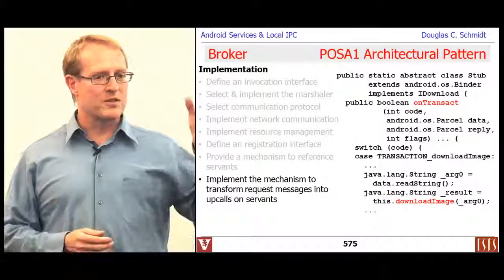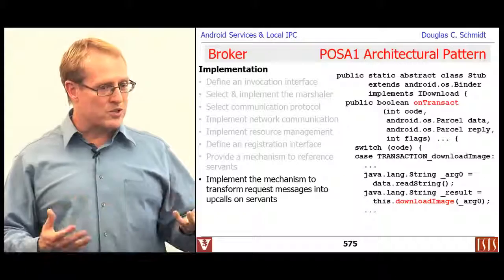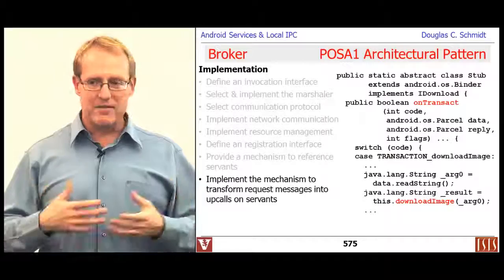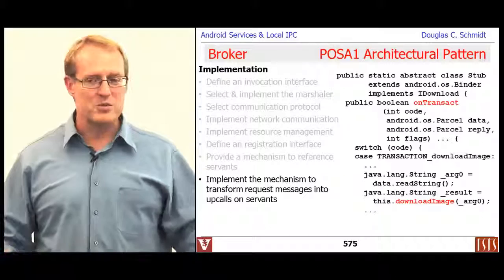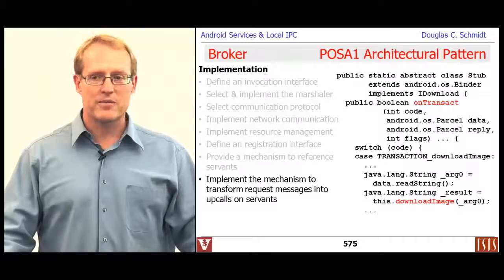That illustrates all the different pieces involved. The client invokes a method on a proxy; the proxy turns the method into a message and calls the transact method to pass it through the requester. The requester sends it across using the binder driver communication protocol. On the receiver side, the dispatcher receives the request, looks up who it's for using the registration interface lookup mechanisms, finds the right stub, and invokes the operation on that stub to call back on the servant's implementation method.